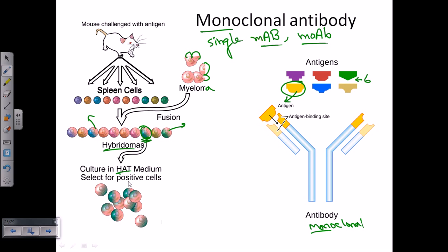The HAT medium only supports the growth of these hybridomas in culture, and then from these hybridomas, we can simply take out those antibodies they produce and use those antibodies.